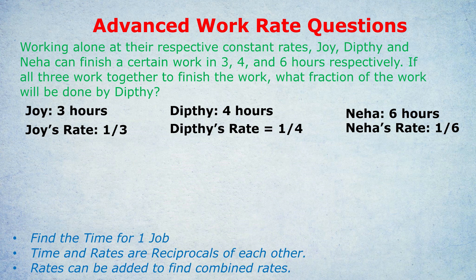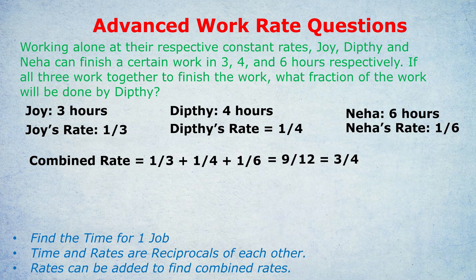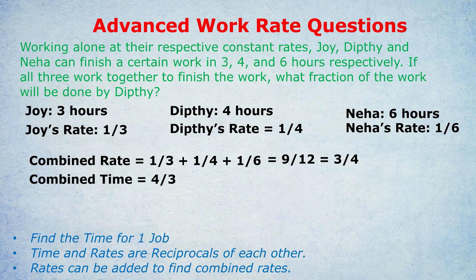They're working together, so we add the rates: 1/3 + 1/4 + 1/6. Finding a common denominator of 12: that gives 4/12 + 3/12 + 2/12 = 9/12, which equals 3/4. So their combined rate is 3/4. If the question were asking how long they take together, we'd flip that to get a combined time of 4/3. However, this question wasn't asking how long — it was asking what fraction of the combined work is Dipty's. So we take Dipty's rate, 1/4, divided by the combined rate of 3/4.